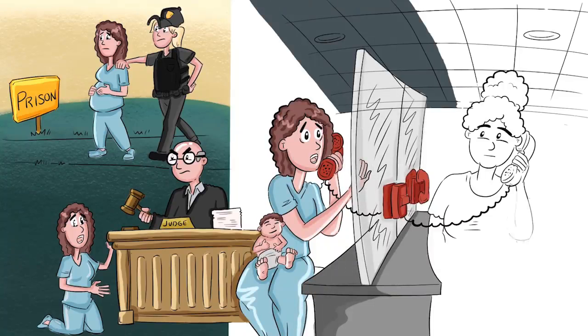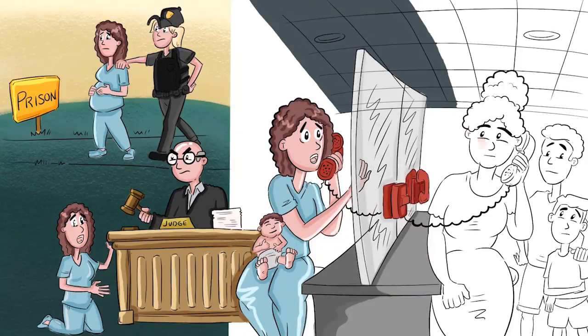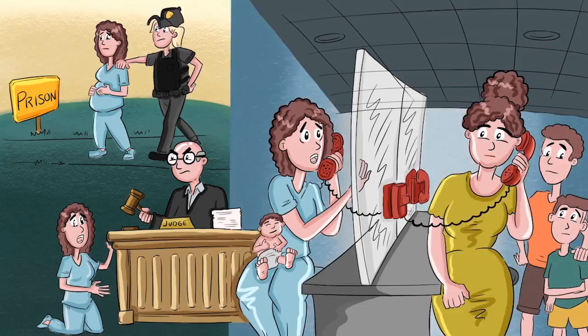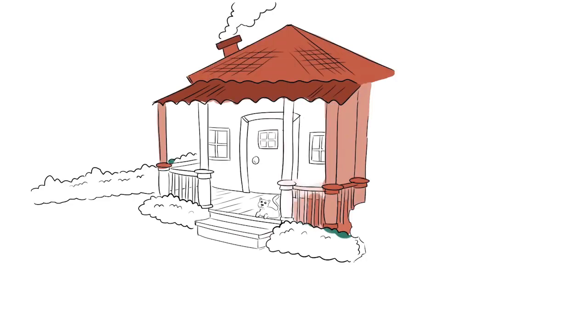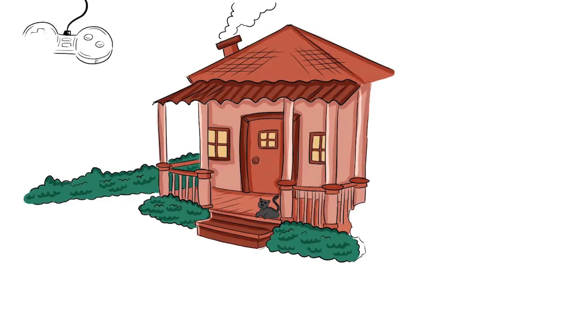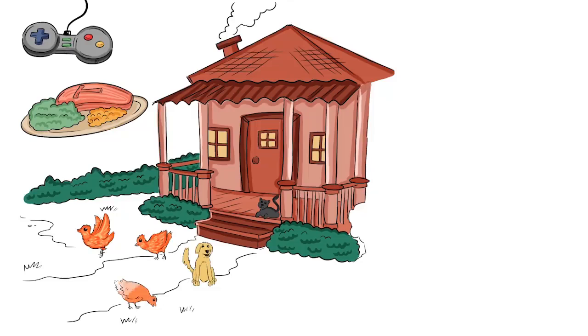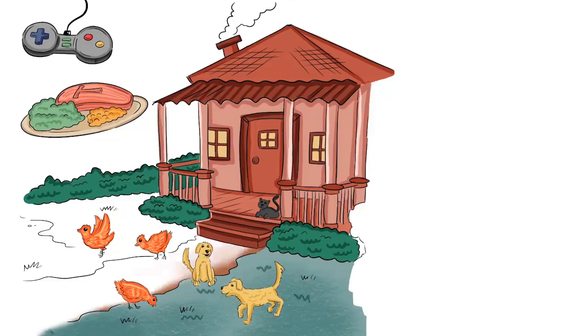At first, my grandma was hesitant because she was already raising my two older brothers, but she knew my mom was desperate. Growing up, my grandma made sure that my brothers and I had everything we wanted. We had video games, delicious southern home cooking, a small house in the countryside, and lots of animals, like some chickens and a few dogs and a cat.